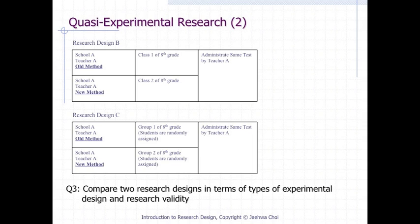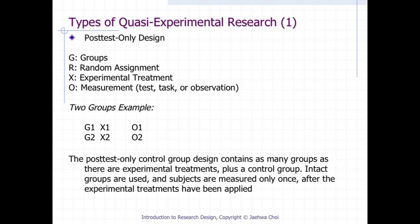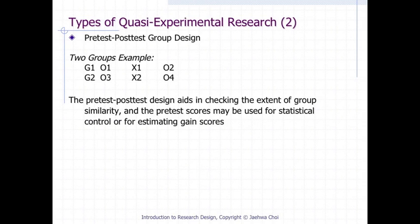Let's compare research designs B and C in terms of experimental design type and research validity. The post-test only quasi-experimental design is identical to the true experimental post-test only design except for the assignment method — it uses intact group assignment. Similarly, the pre-test/post-test quasi-experimental design is identical to the true experimental version except that subjects are assigned using intact groups rather than randomly.